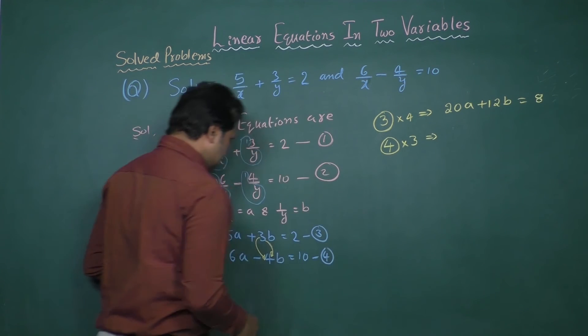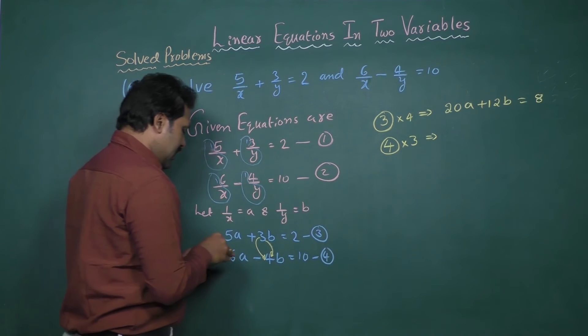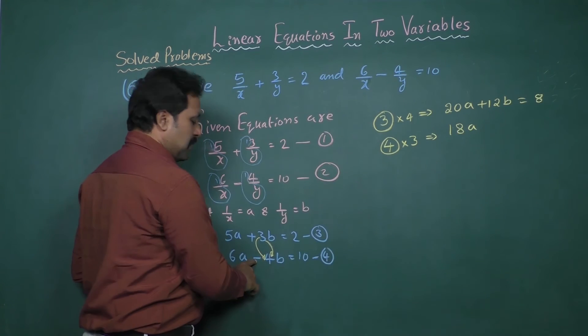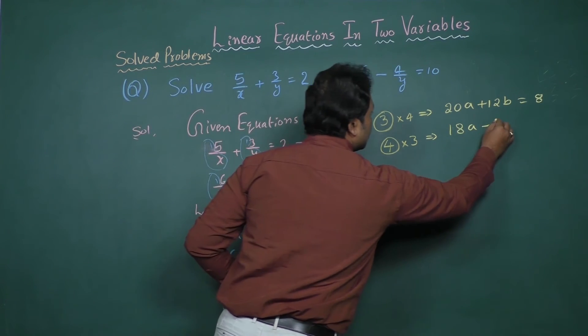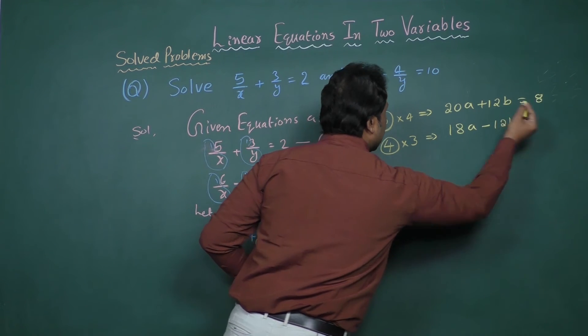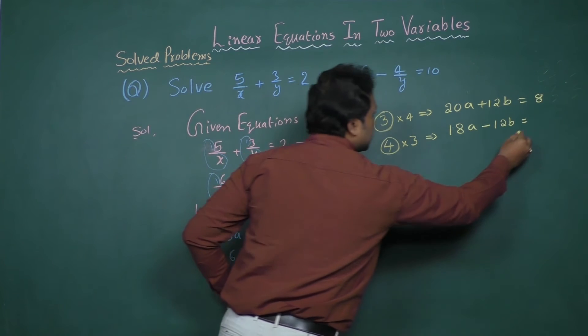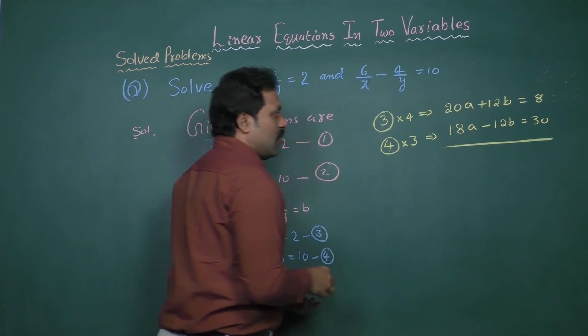That implies 6 into 3 is 18a minus 4 into 3 is 12b equal to 10 into 3 is 30.